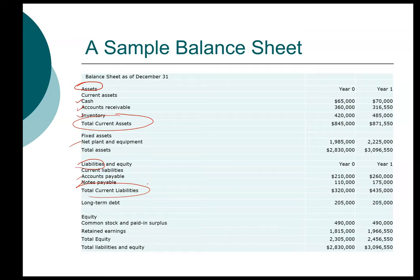Next in terms of liquidity is long-term debt. If you add up current liabilities and long-term debt, you will get total liabilities or total debt. Next in terms of liquidity, we have equity. Equity is owned by stockholders and it is really not liquid.